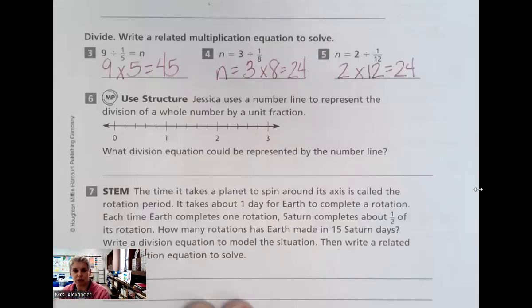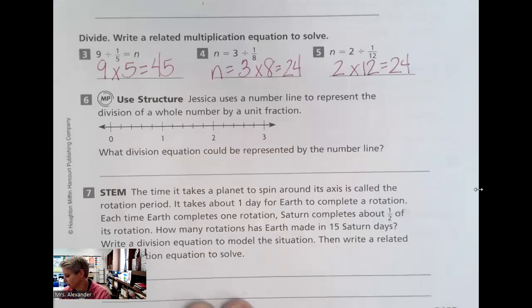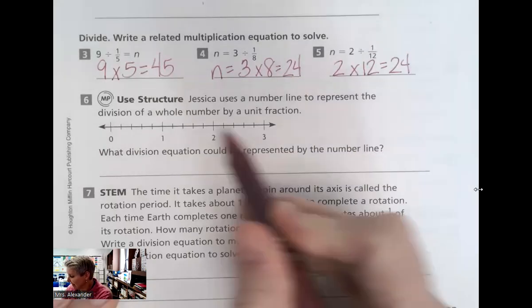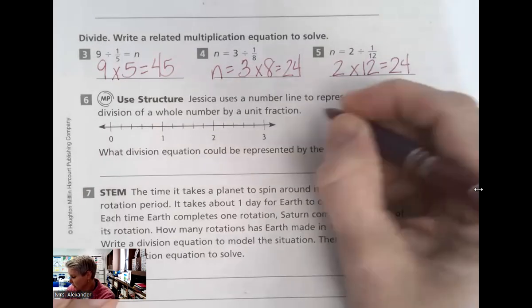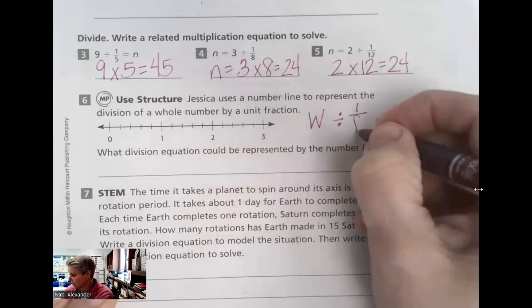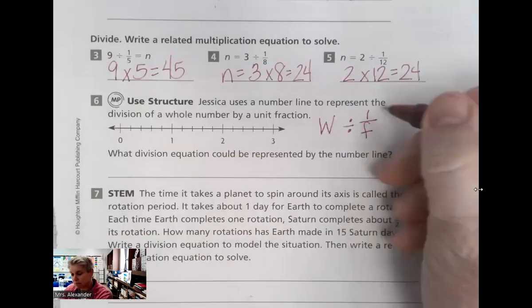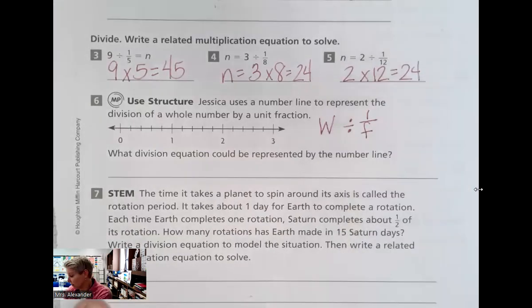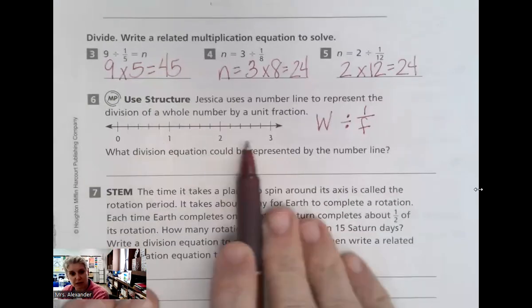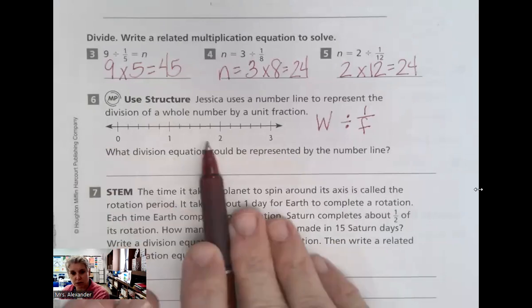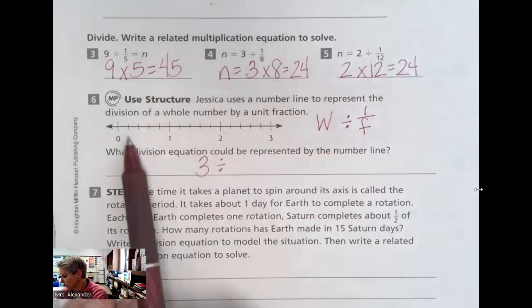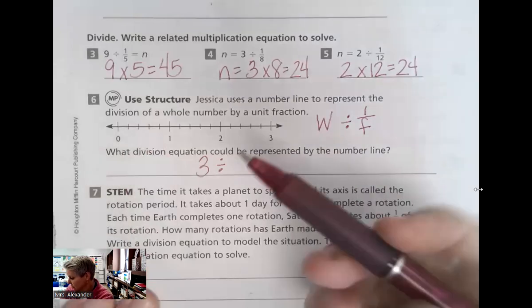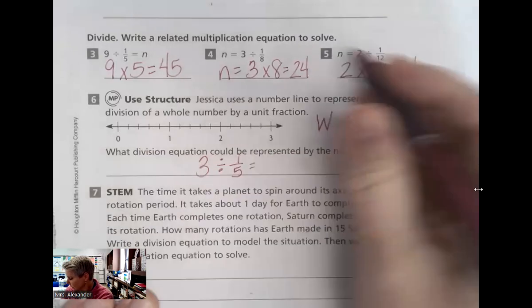Jessica uses a number line to represent the division of a whole number by a unit fraction. What division equation could be represented by this number line? So she has a whole number divided by a unit fraction. So we know a whole number, and it's going to be divided by a unit fraction. So our whole number, I'll use a W and a unit fraction. I'll use an F for that denominator. Remember, unit fraction means it has a one in the numerator. So our equation could be, what would our whole number be if we're looking at this number line? Our whole numbers go to three divided by, how much is each whole divided into? One, two, three, four, five. So they were divided into fifths.